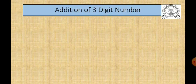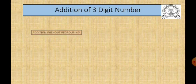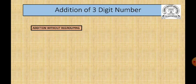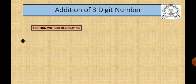In addition, we need a minimum of two numbers and there is no maximum limit. So first we will do addition without regrouping. Without regrouping means without any carrying. As we are doing addition of three-digit numbers, we have to place the hundreds, tens, and ones.